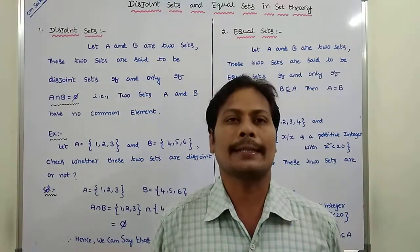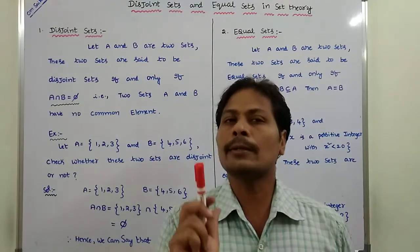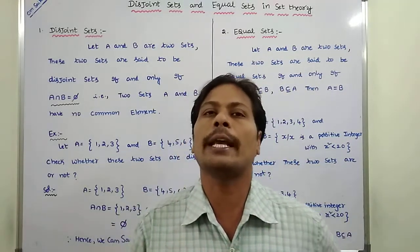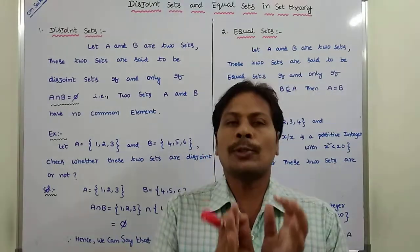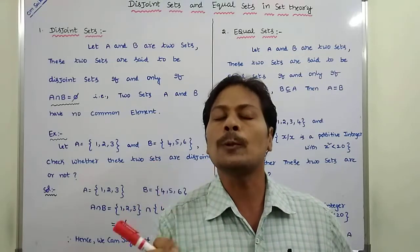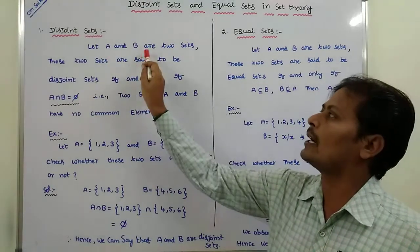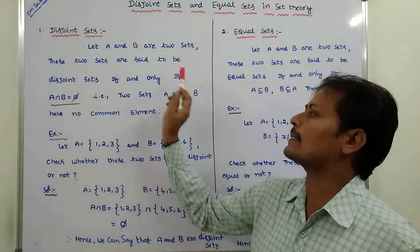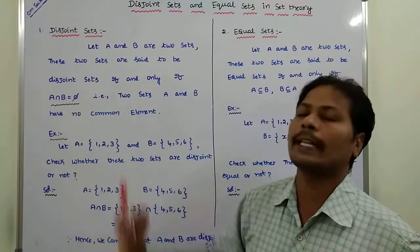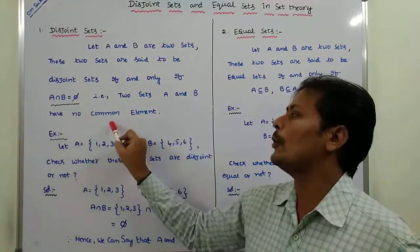First, what are disjoint sets? Suppose we take two sets, capital A and capital B. These two sets are said to be disjoint sets if A intersection B is equal to φ (empty set). That is, these two sets have no common element. The definition: let A and B be two sets. They are said to be disjoint sets if and only if A intersection B equals φ, where φ is the empty set or null set.